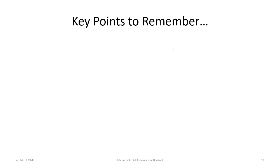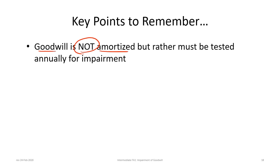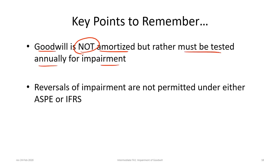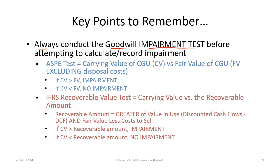Some key points to remember: goodwill is not amortized but must be tested annually for impairment, and reversals of impairment are not permitted under either ASPE or IFRS — once an impairment is recorded, we cannot go back. We must always conduct an impairment test before calculating or recording any impairment; do not jump straight to the calculation. Under ASPE, compare carrying value versus fair value, excluding disposal costs. If carrying value exceeds fair value, impairment exists — for example, if something worth $100,000 is carried at $150,000.